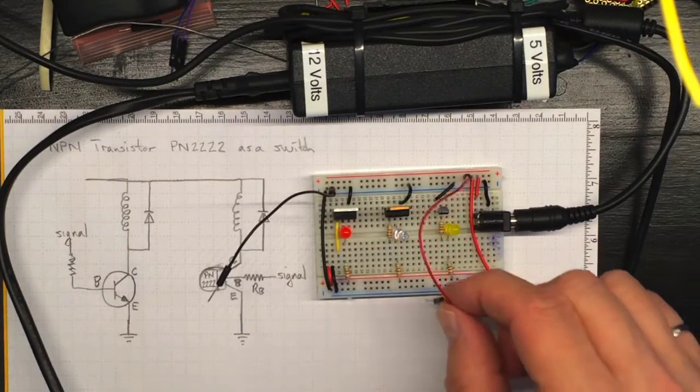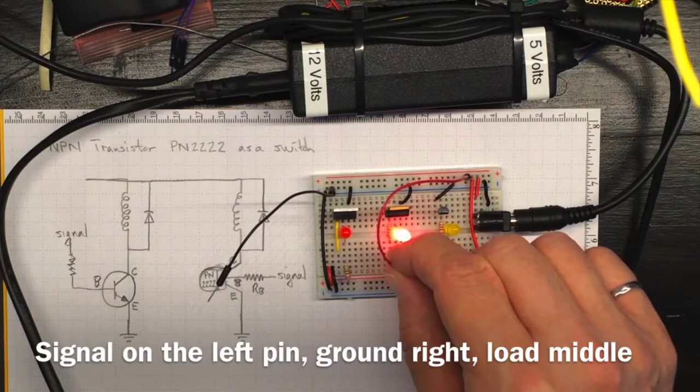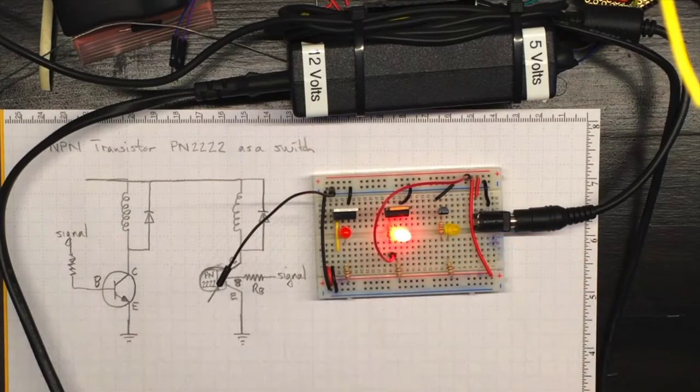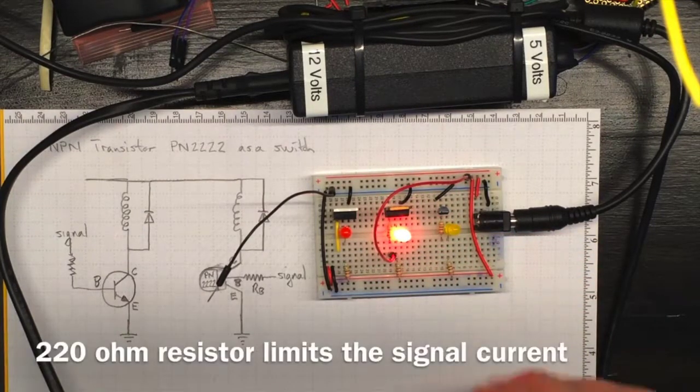If I connect the positive side to the signal input on this Darlington transistor, its LED goes on.